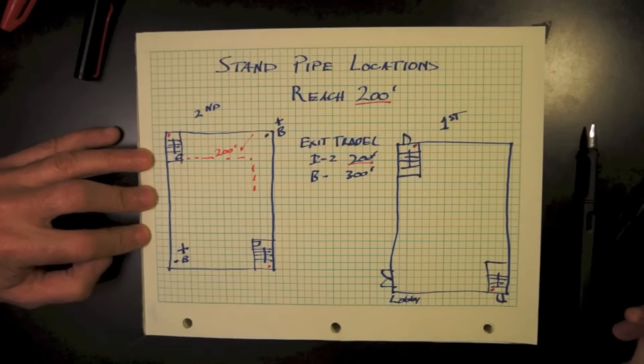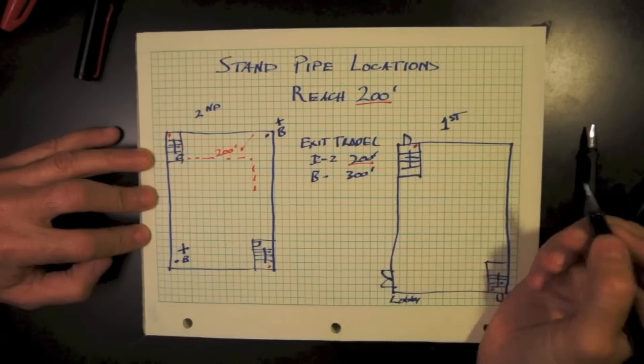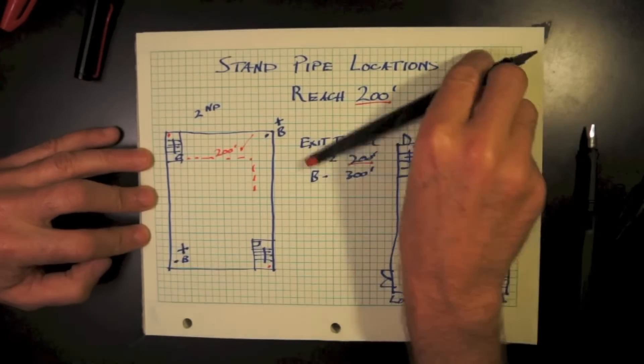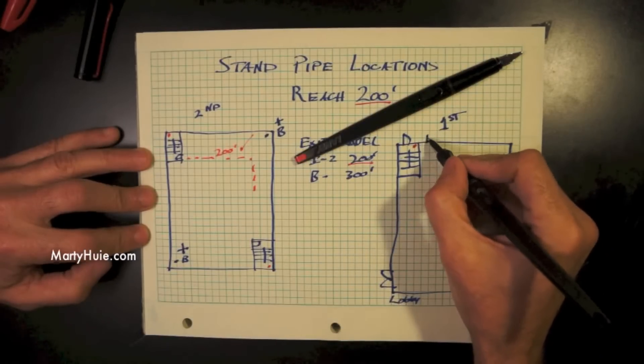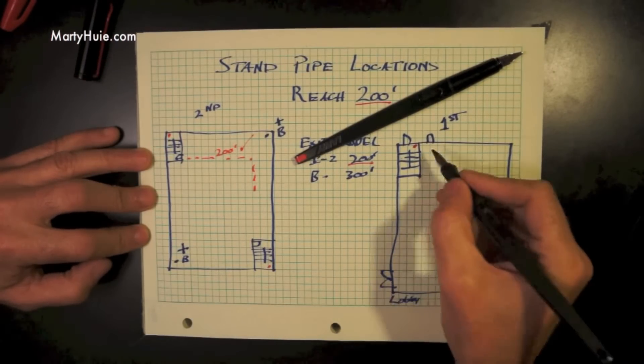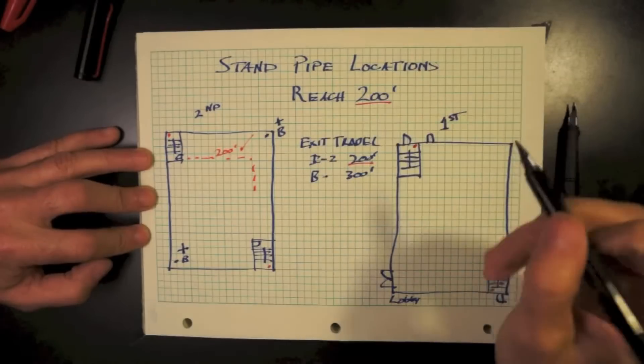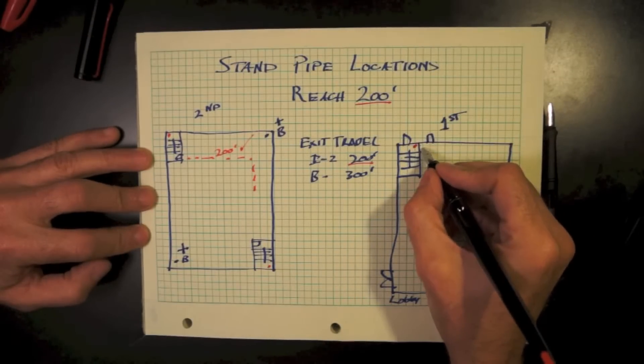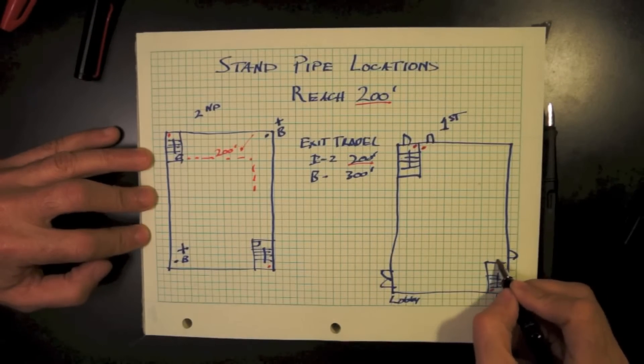So we will not have access to the standpipe inside the stair. Our exits may be exiting directly to the outside at various locations on the ground floor. Therefore, we need to think about where standpipe locations are so we can reach one within 200 feet.